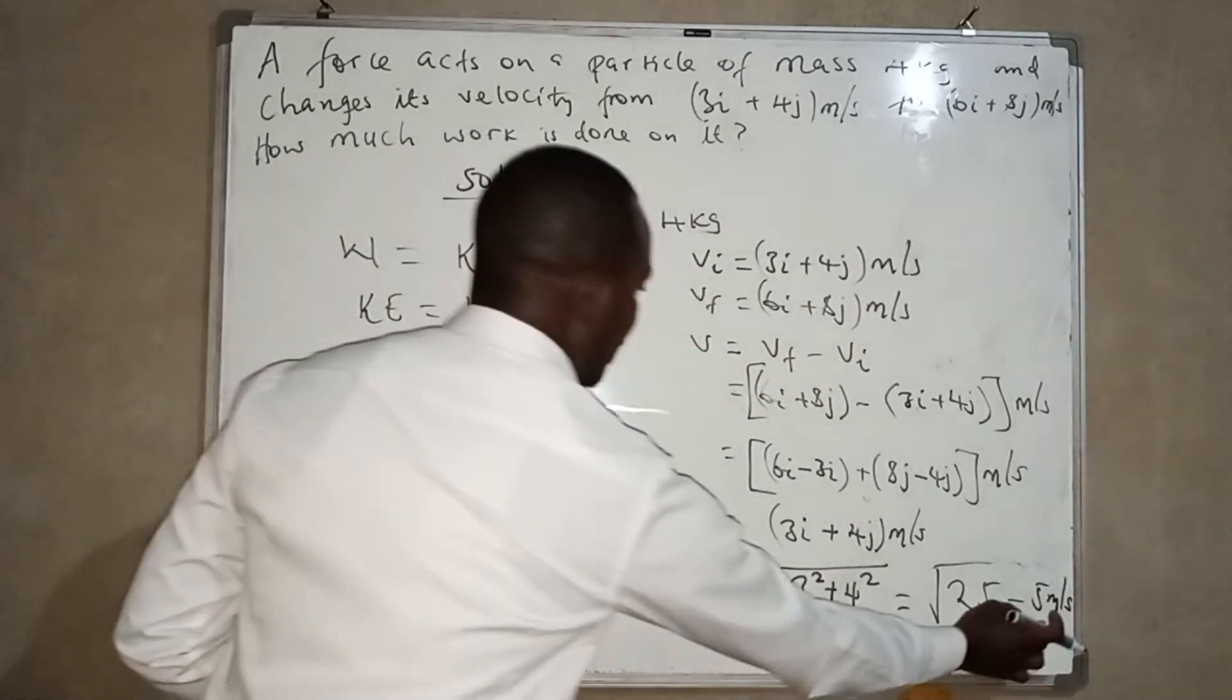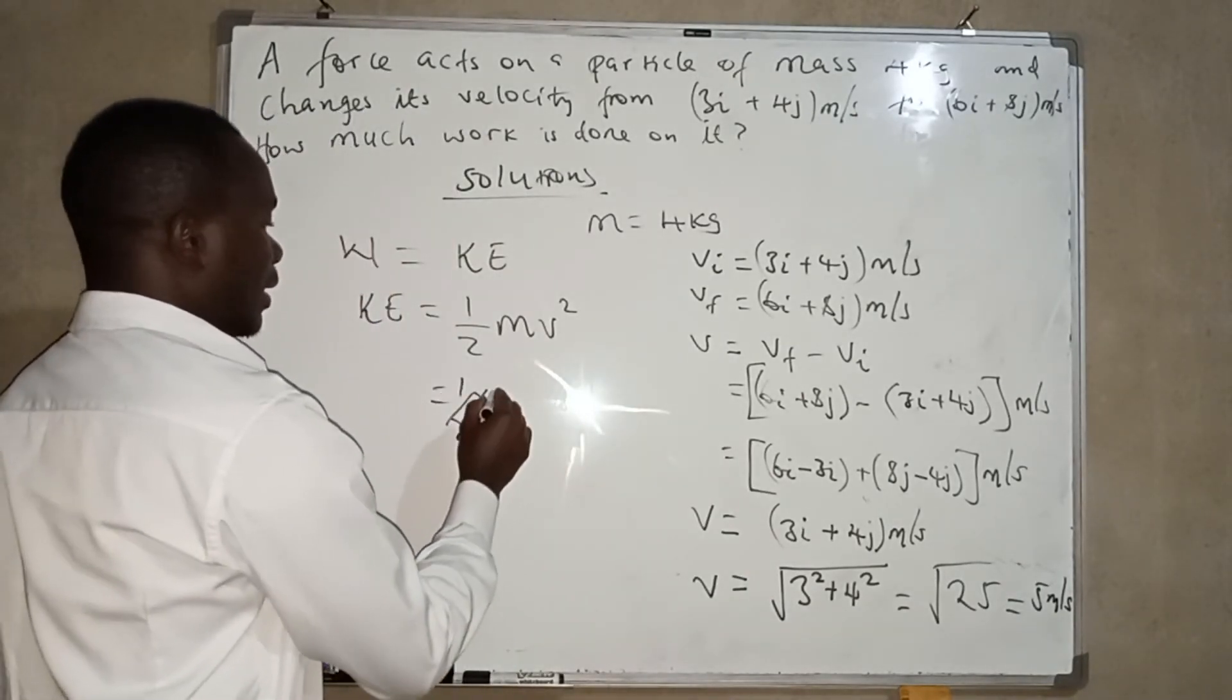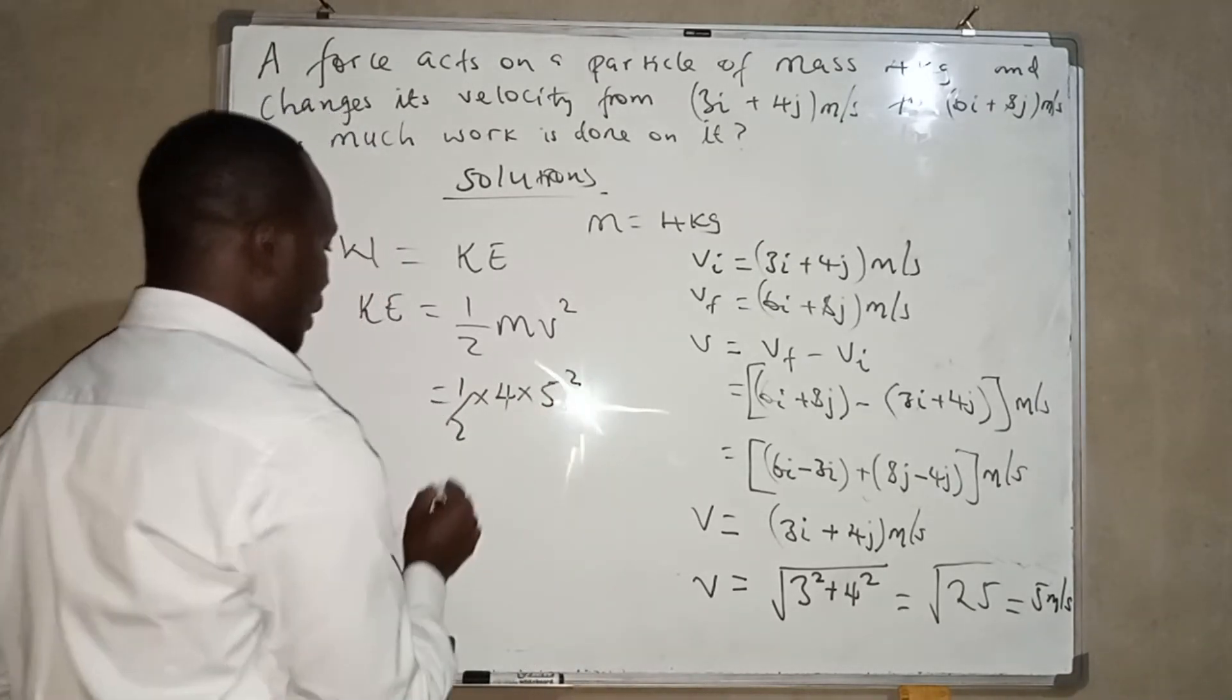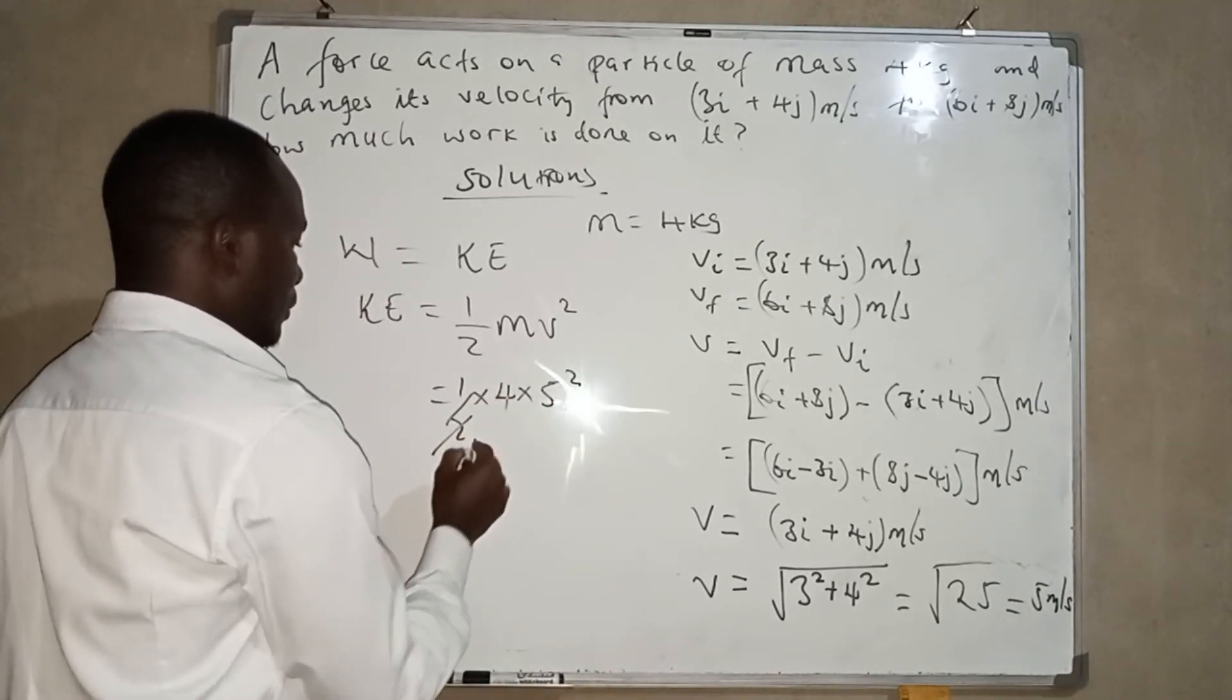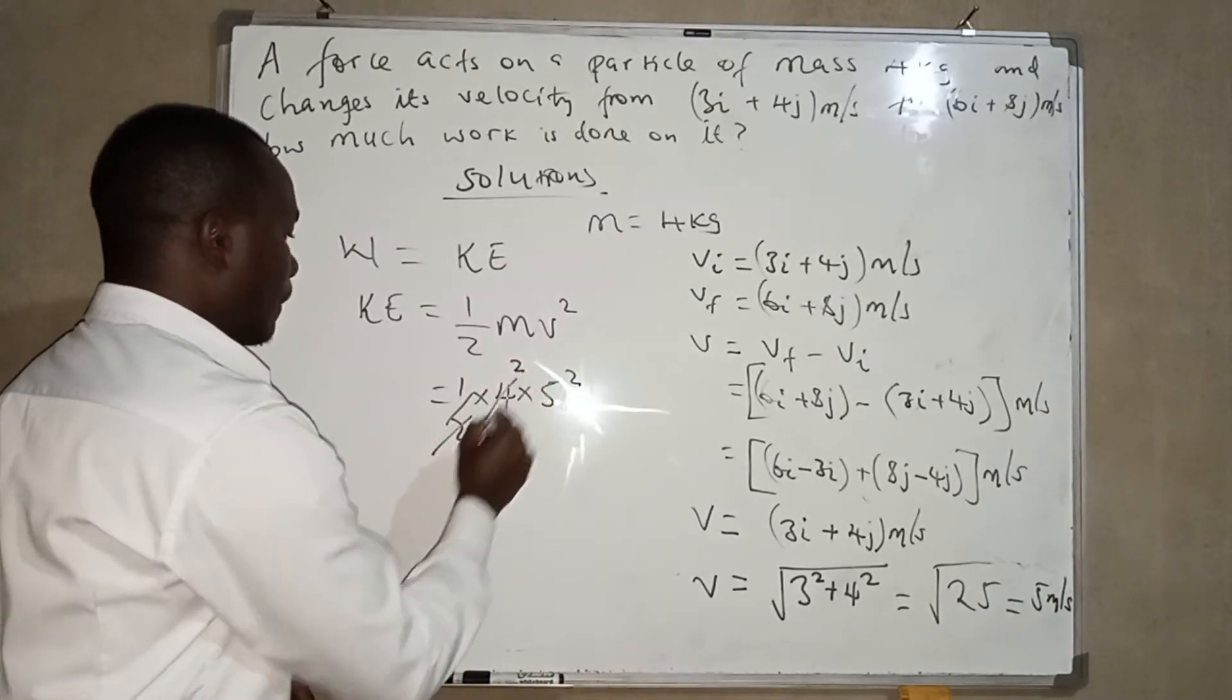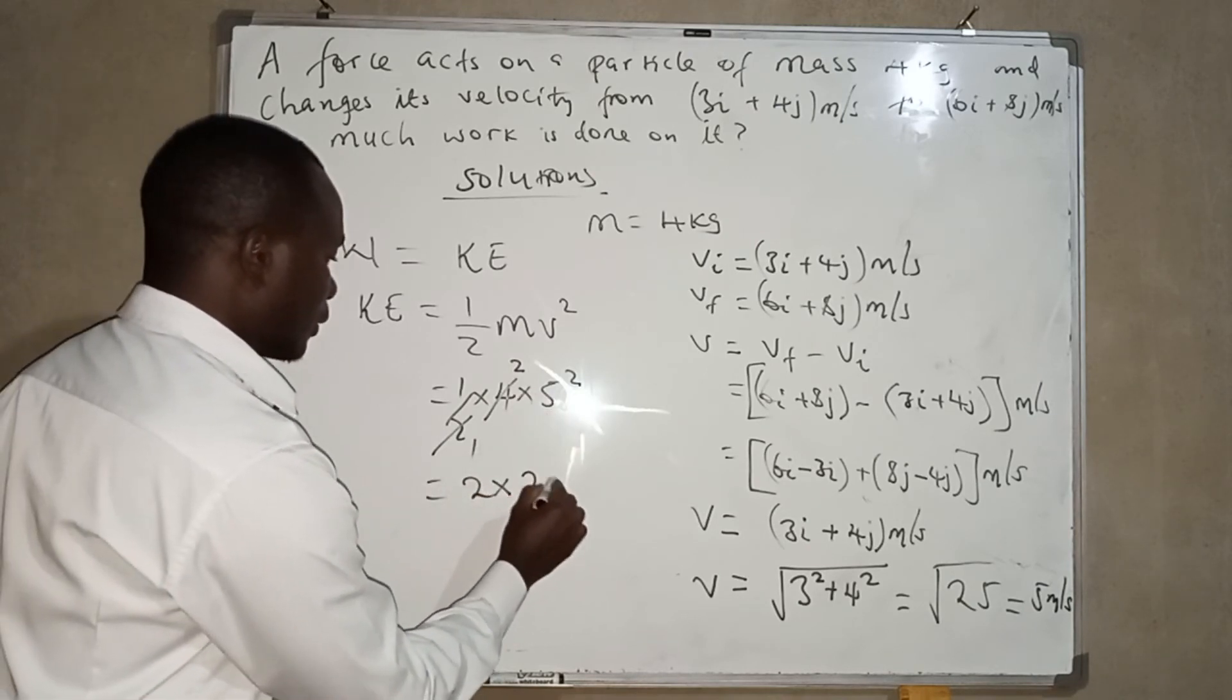Now plugging in this value, we're going to have half times mass is 4 times 5 squared. So this is 2 into 4 is 2, so we have 2 times 5 times 5 is 25.